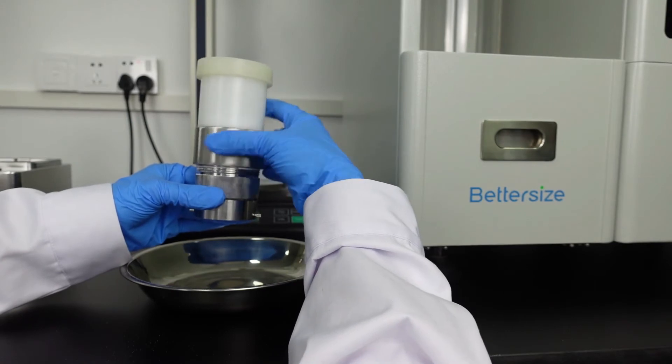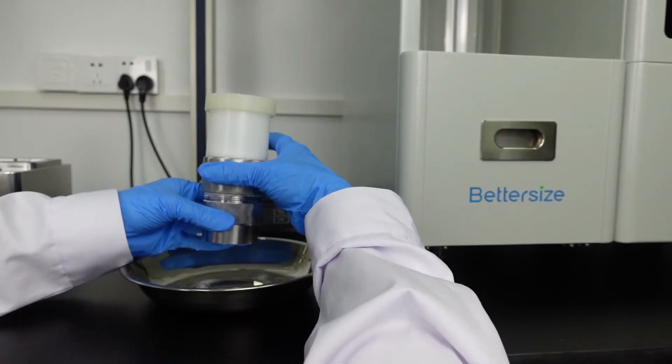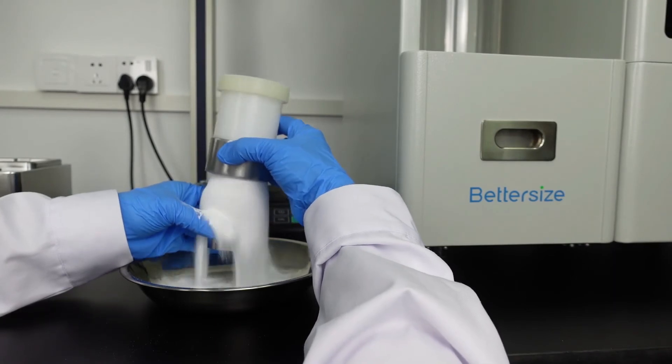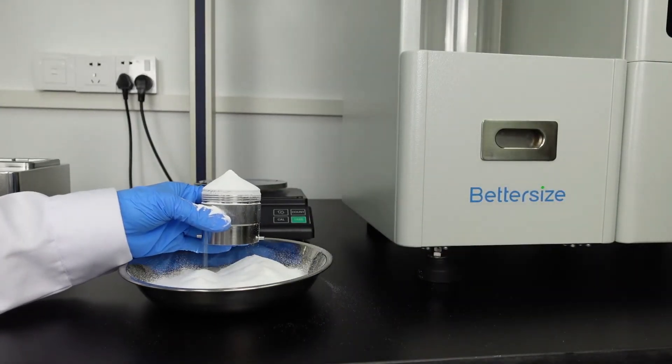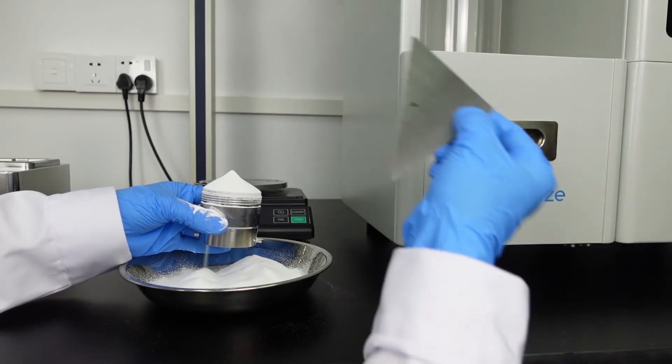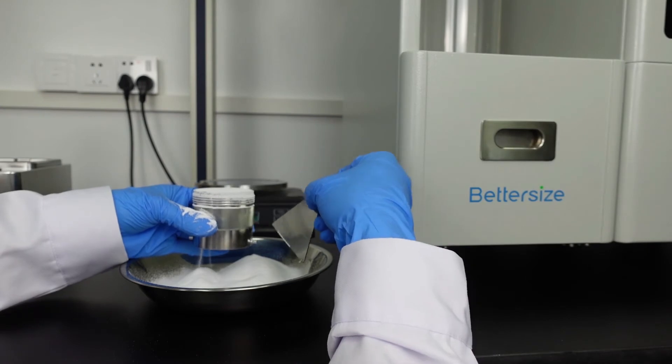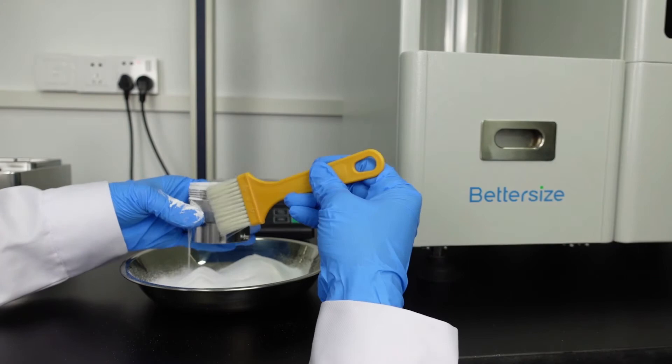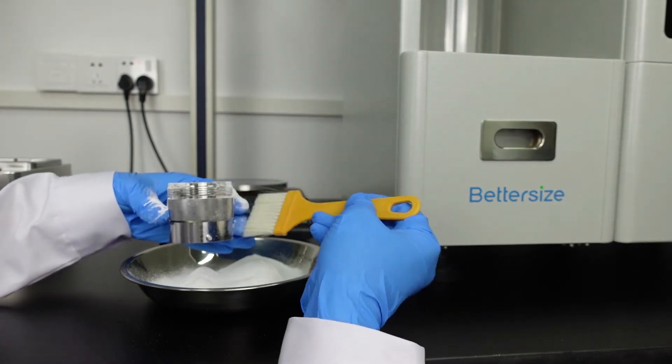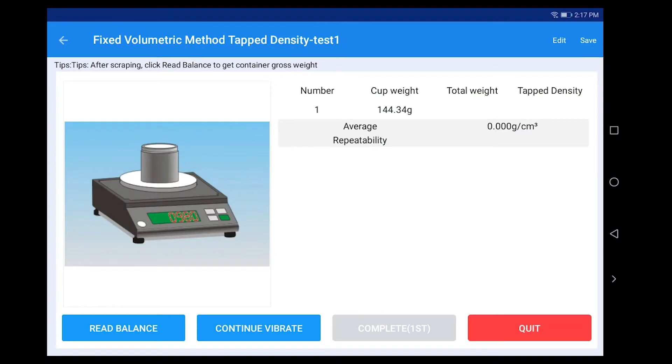Separate the 100 ml container from the extension tube. Scrape excess sample from the top of the 100 ml container with a scraper, and gently sweep the powder adhered to the outer wall of the container with a brush, and place it on the balance.